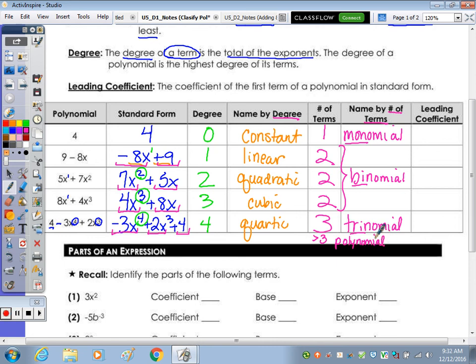Leading coefficient. Well, we have no leading coefficient in the first one, as it's the coefficient of the first term of a polynomial that's in standard form. So our leading coefficient here is going to be the negative 8, here 7, here 4, here negative 3. So that term right in the front, or that coefficient of the term, 7, 4, negative 3.